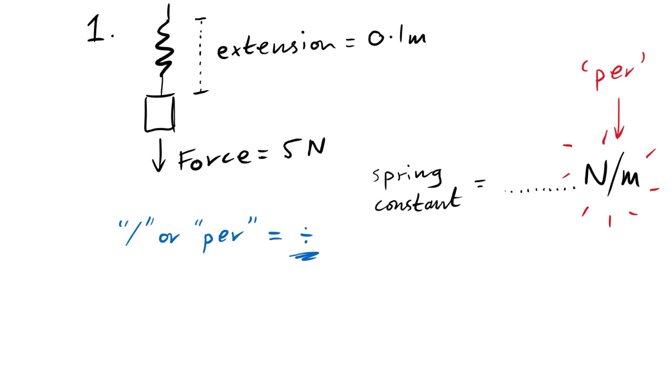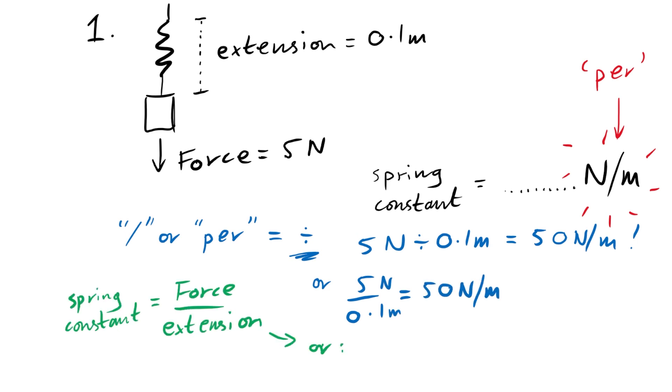You therefore know that you have to divide newtons, that's force, by extension in metres, to find the spring constant. You've just come up with the equation yourself. Spring constant is equal to force divided by extension.